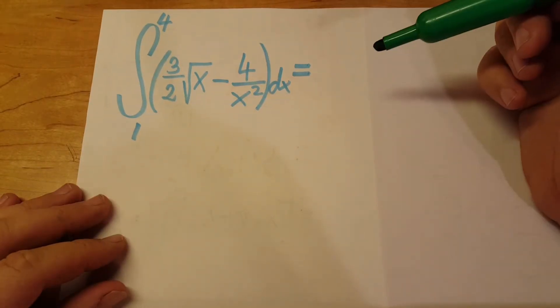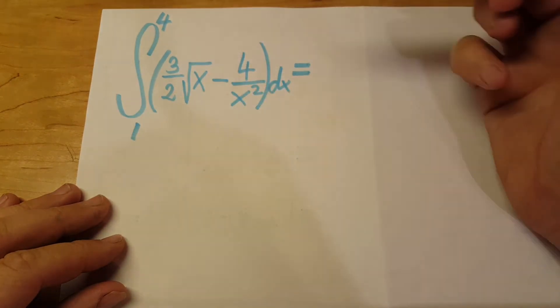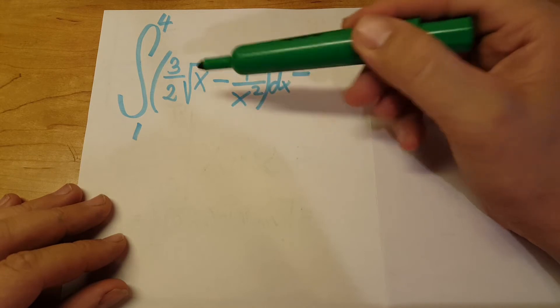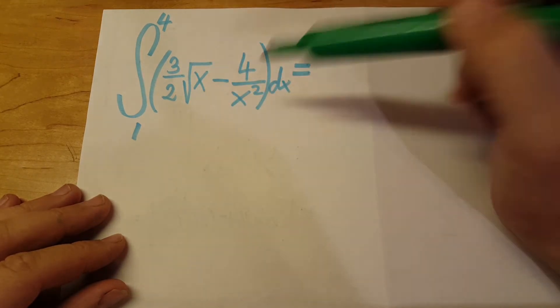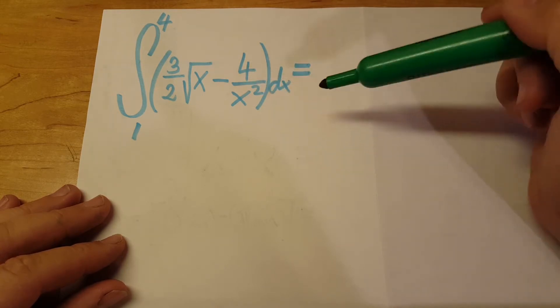Okay, let's evaluate this integral. We're going to evaluate it from 1 to 4. The integral of 3 over 2 times square root of x minus 4 over x squared dx.